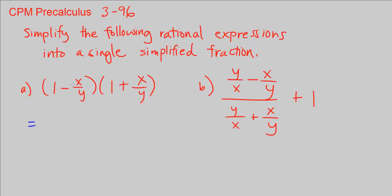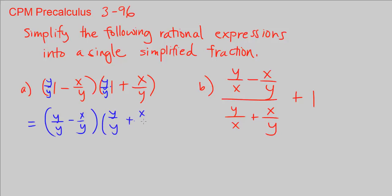In order to add the 1 and the x over y, we're going to need a common denominator. So let's multiply the 1 by y over y. Similarly, let's multiply this one by y over y as well. That's going to give us y over y minus x over y, times y over y plus x over y.